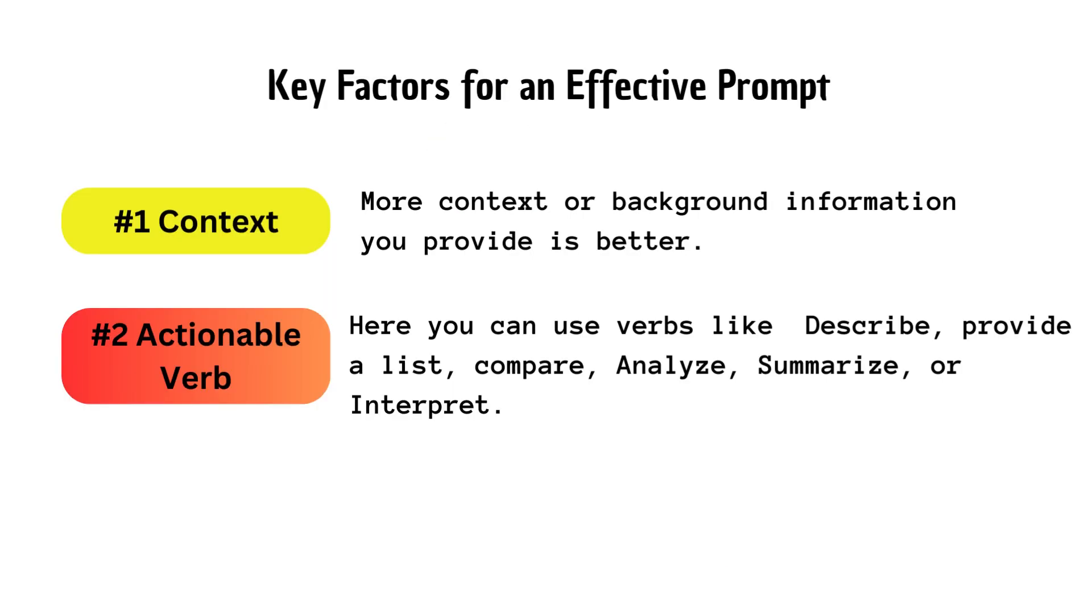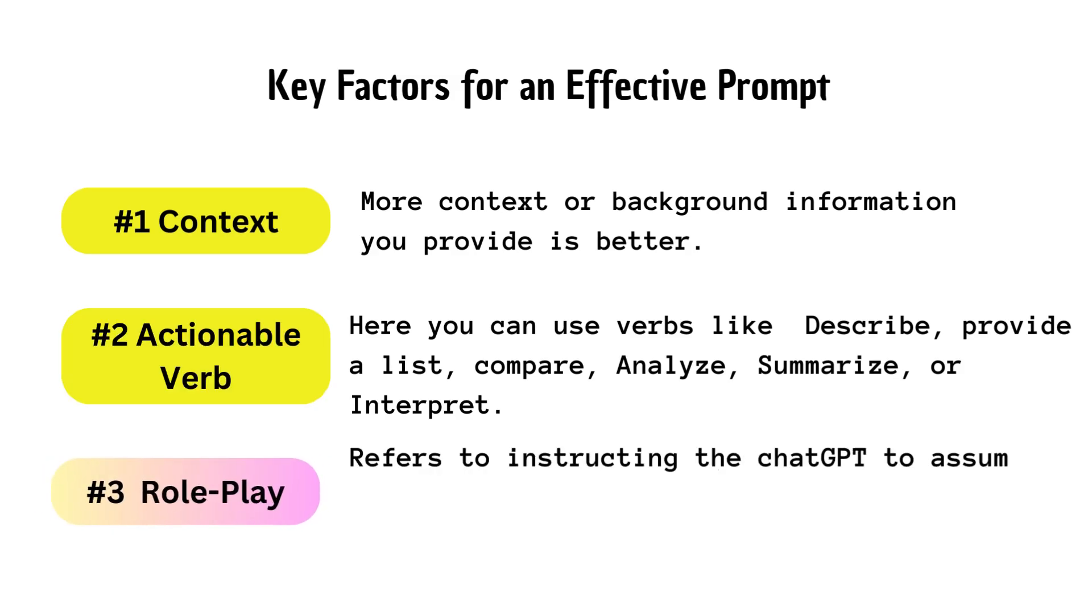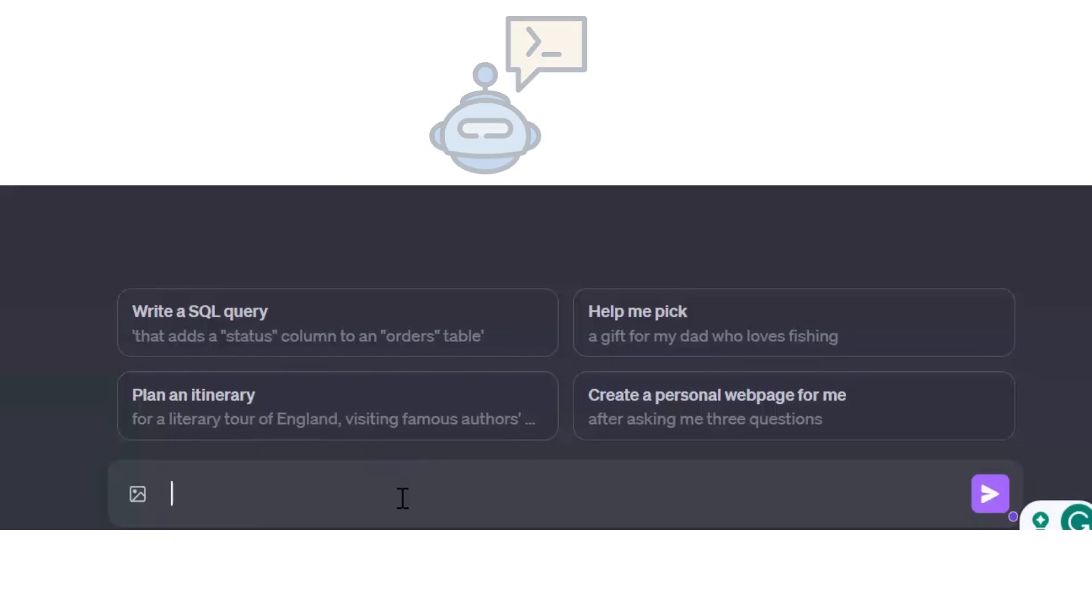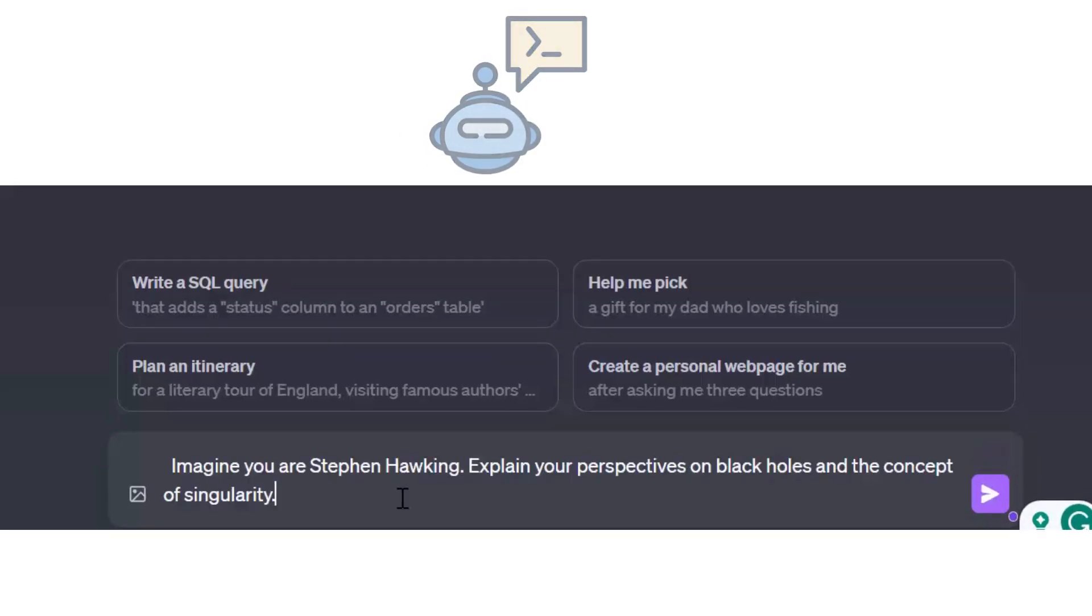Key factors for an effective prompt, number three is role play. It refers to instructing the ChatGPT to assume a particular identity, personality, or expertise level to shape its responses. For example, a basic prompt: Tell me about black holes. The refined prompt: Imagine you are Stephen Hawking. Explain your perspectives on black holes and the concept of singularity.